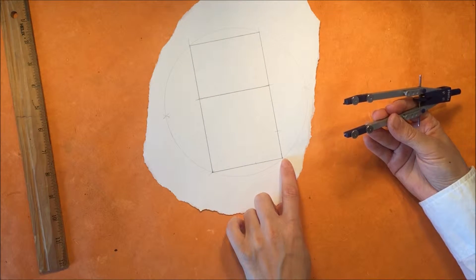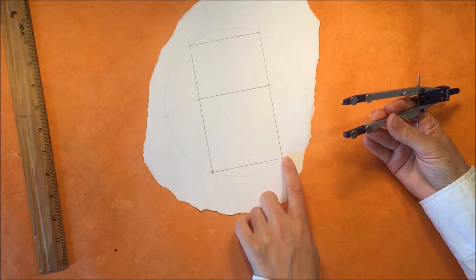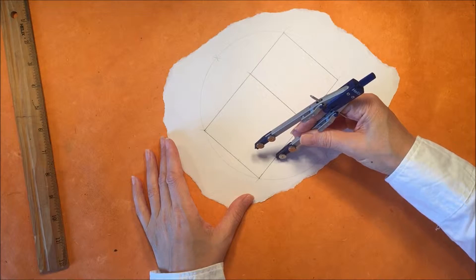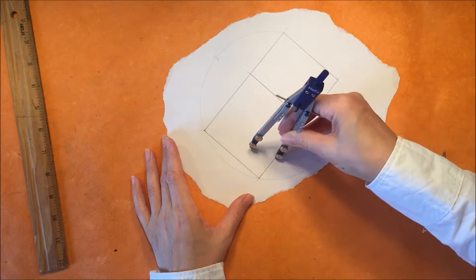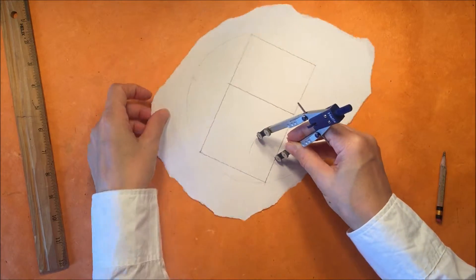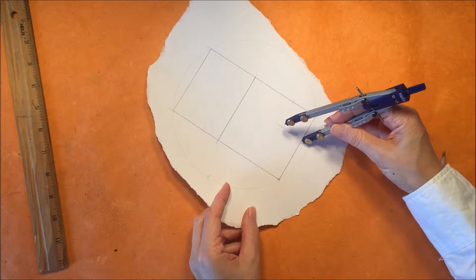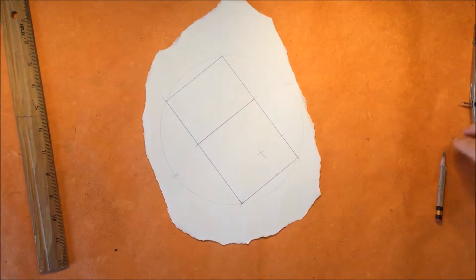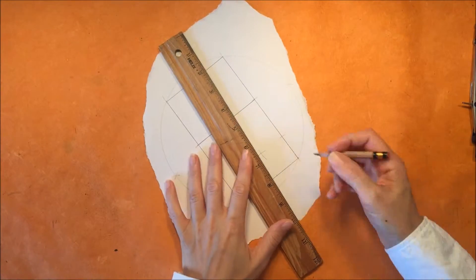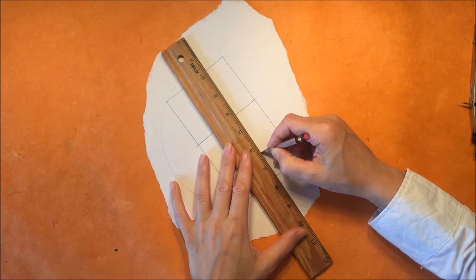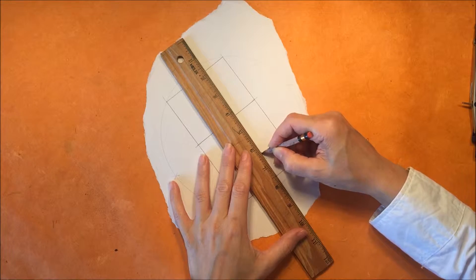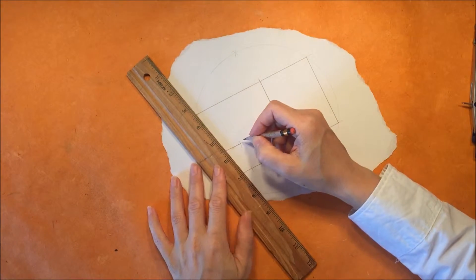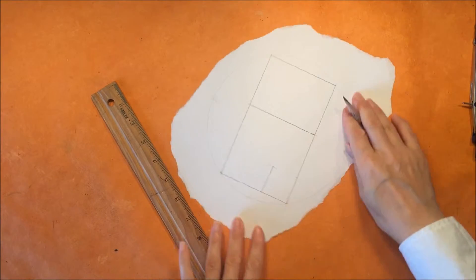And so now I'm going to position my compass on one of the lines that one of the arcs that cross the line and now I'm going to make an arc out in the center of the page and then I'm going to do the same thing on the other side and make another arc and where the lines cross is going to be the corner of my square. So I'm just going to go ahead and connect this point to the side of the square and I'm going to do the same thing on this side.